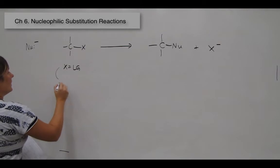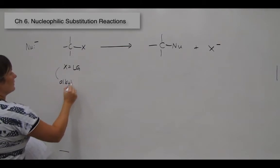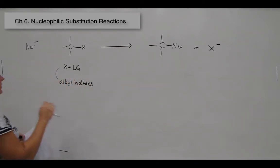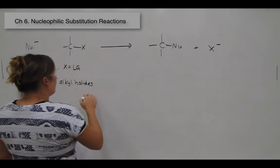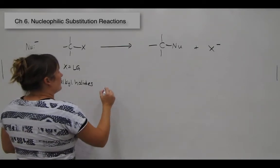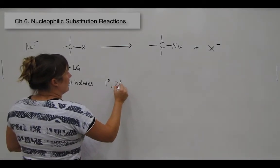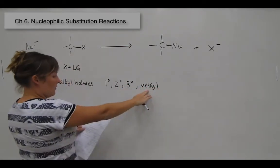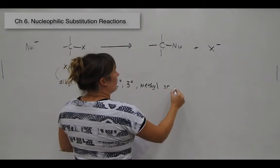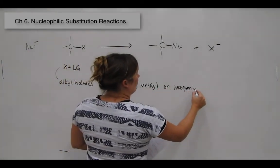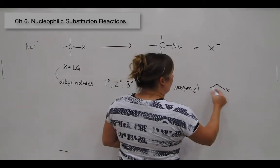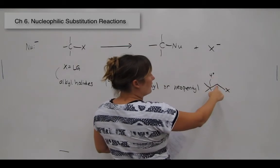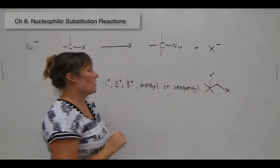Our substrate is mainly alkyl halides, and therefore X was a halogen. You need to be able to characterize these alkyl halides as primary, secondary, tertiary, methyl — meaning you have no R groups attached — or neopentyl. Remember that neopentyl has a leaving group attached to a carbon that is next to a quaternary carbon.